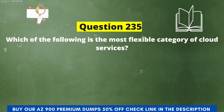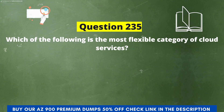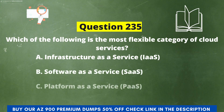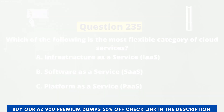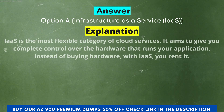Next question: Which of the following is the most flexible category of cloud services? The options are: A) Infrastructure as a Service, B) Software as a Service, C) Platform as a Service. The correct answer is option A, Infrastructure as a Service. Explanation: IaaS is the most flexible category of cloud services — it aims to give you complete control over the hardware that runs your application. Instead of buying hardware, with IaaS you rent it.